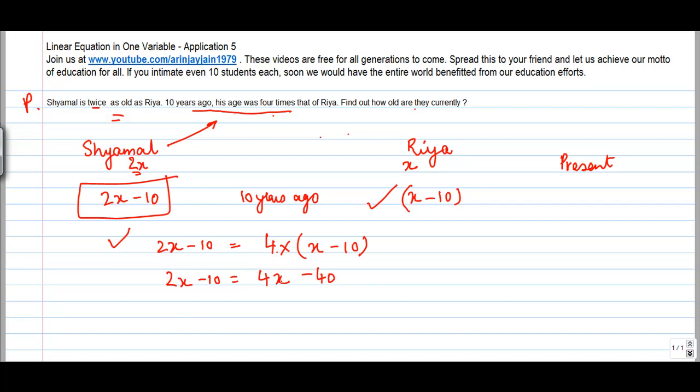Once I have X on both sides, what I do is I transpose these two numbers. So I get 4X here and I move this 2X to the right hand side. As I move, this sign will change.